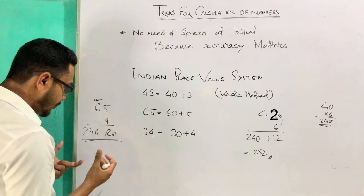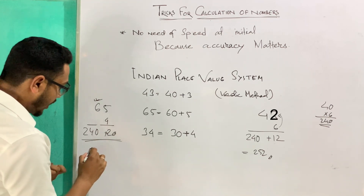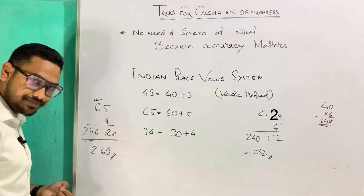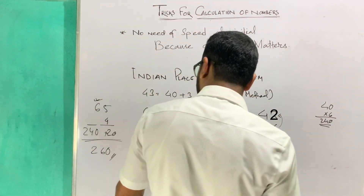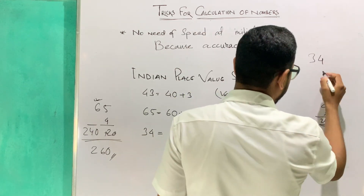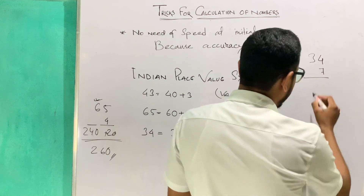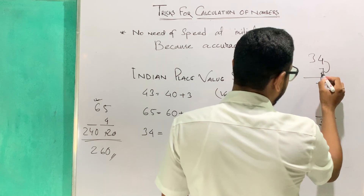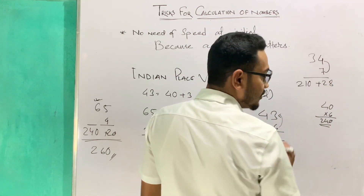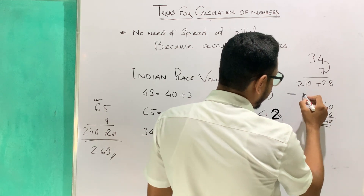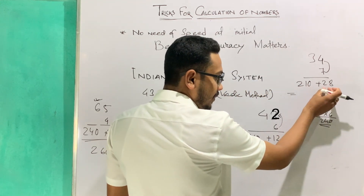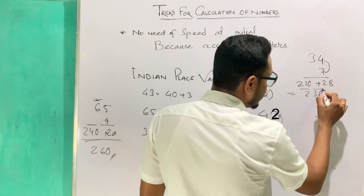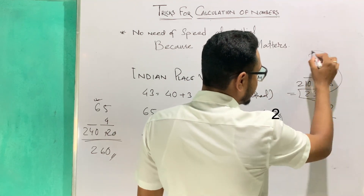So that gives 240. Now adding: 240 plus 20 gives 260. Likewise for 34 times 7: 7 times 4 is 28, and 7 times 3 is 21, adding a zero gives 210. So 210 plus 28 gives 238. So 34 times 7 equals 238. This is the answer — clear and quite easy.